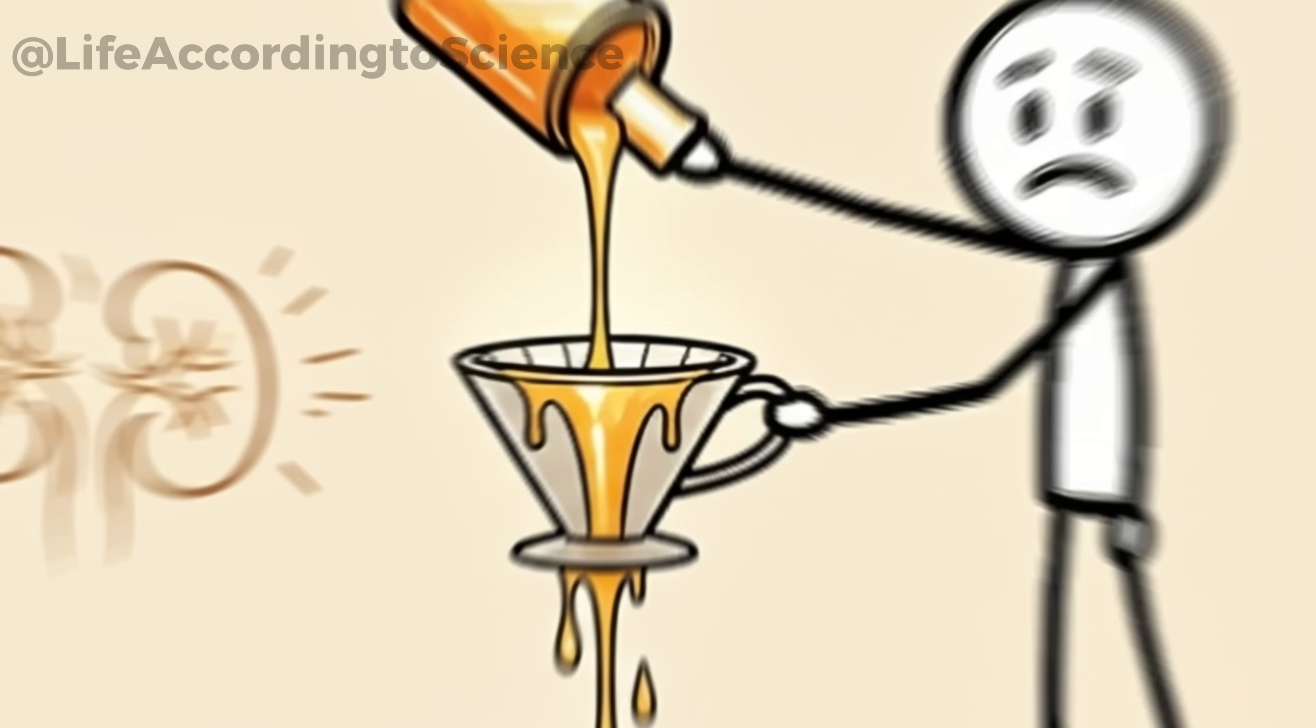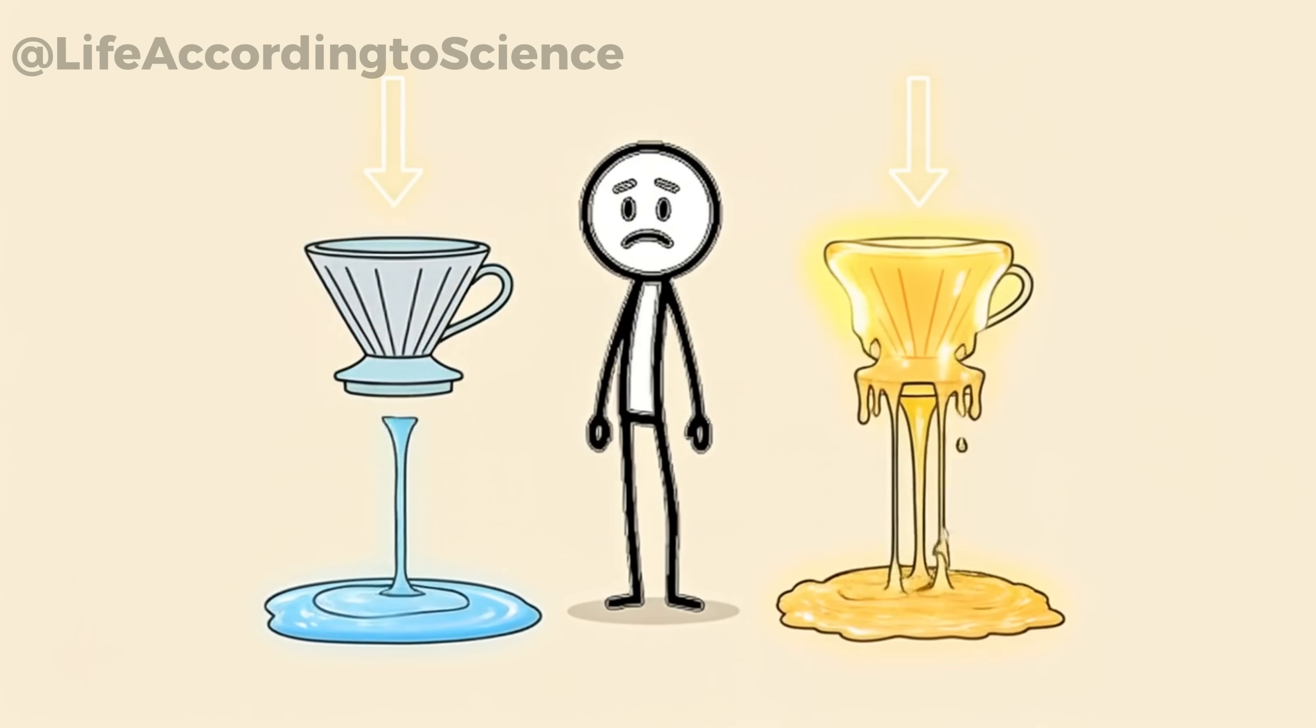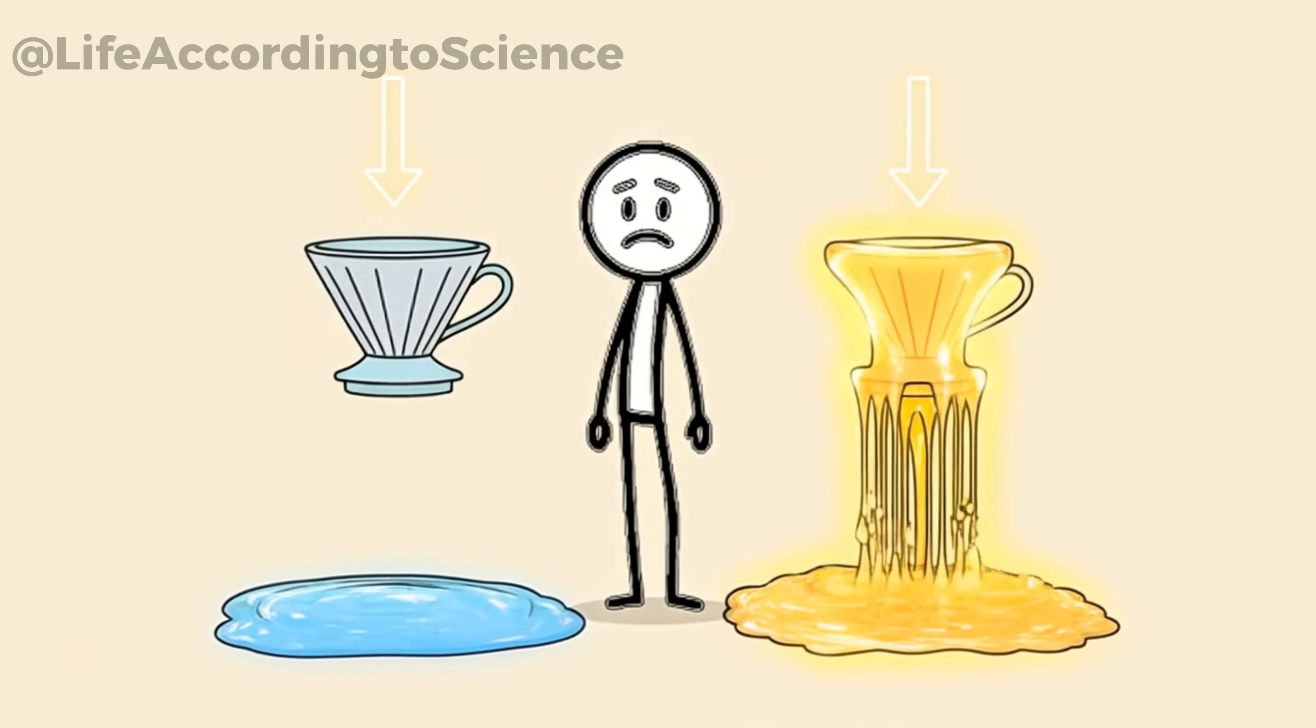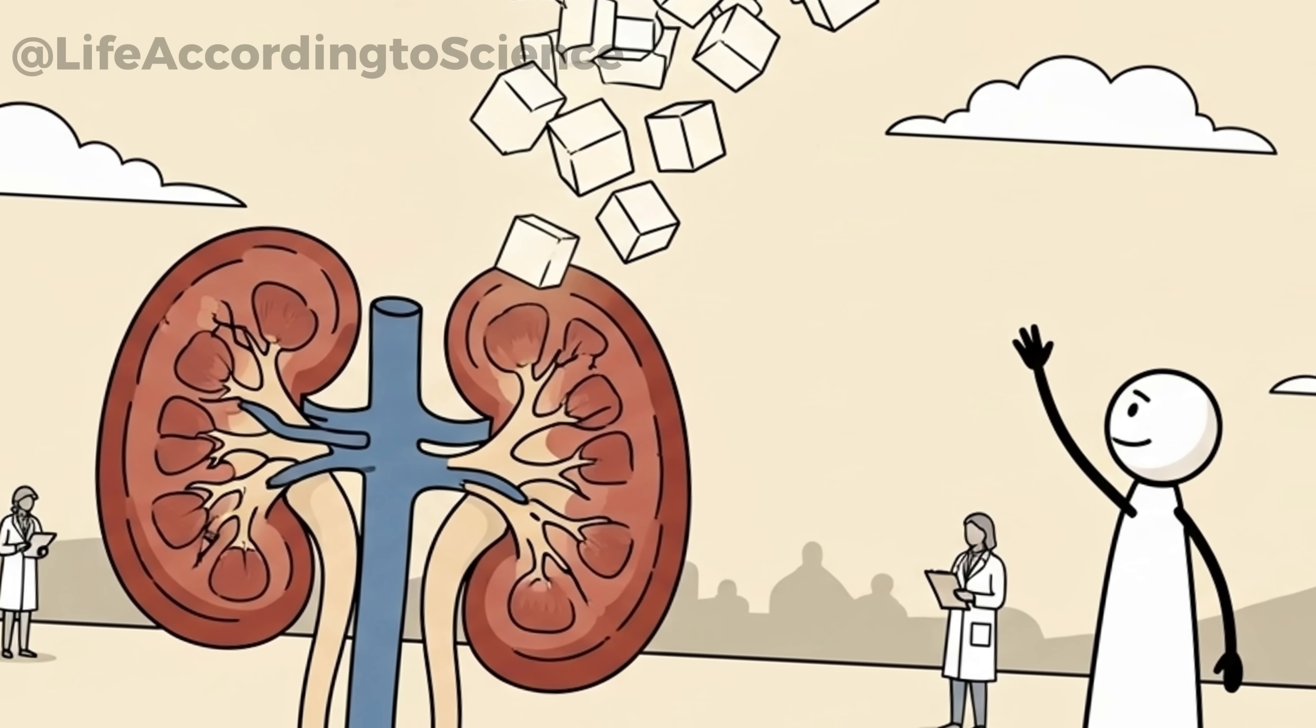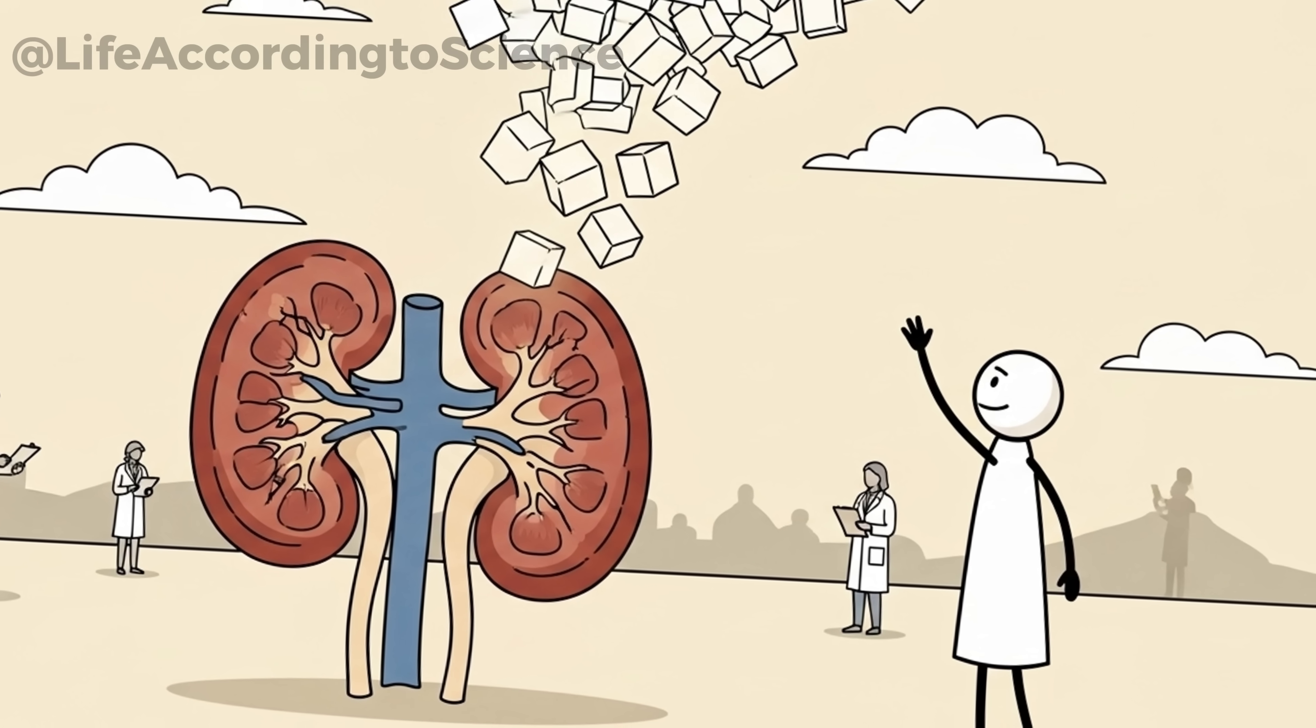Think of it like a coffee filter. Use it once, it works perfectly. But if you keep pouring sticky syrup instead of water, the filter clogs and weakens. This is essentially what high-sugar diets do to your kidneys.